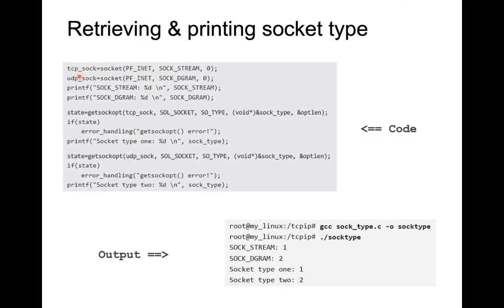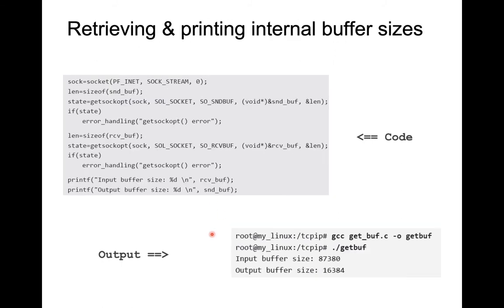Now how about we do another program for retrieving and printing the internal buffer sizes. Inside the socket level, this is related to the sending buffer and the receiving buffer. We want to first see what values are there, and then we want to alter them. So in the first example, we want to see what the existing values are in the internal buffers.